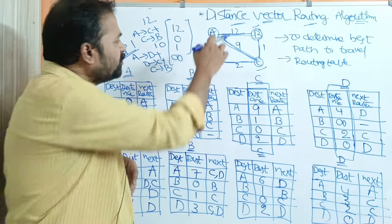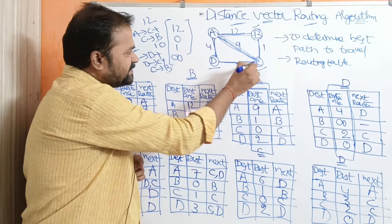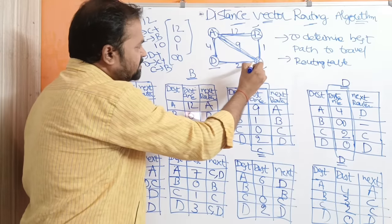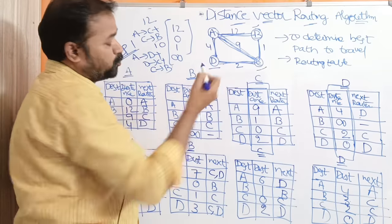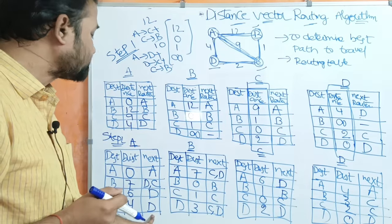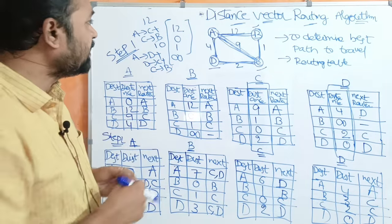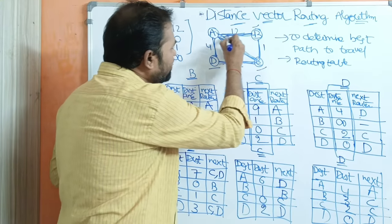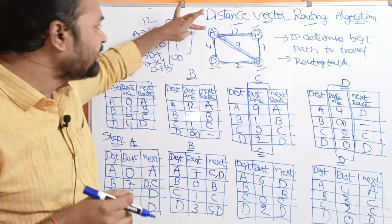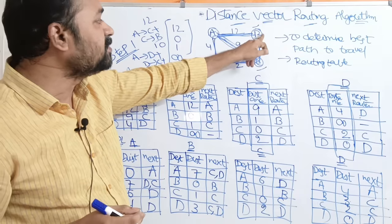Likewise, let us find out for router B. B's neighboring routers are A and C. So now A's distance vector as well as C's distance vector information will be shared with B. B now has its own routing table information as well as A's and C's distance vector information.